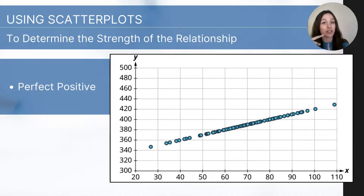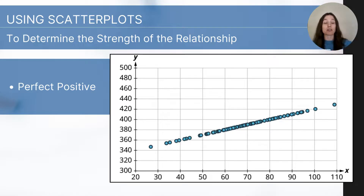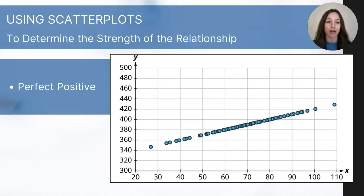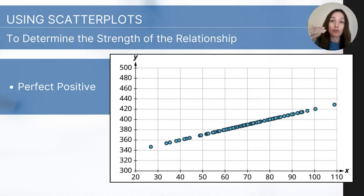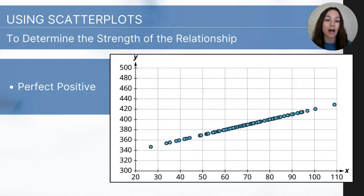Our dots represent the intersection between the two variables, but the dots as a whole — looking at them as a pattern — can show whether there is a relationship and to what degree and in what direction. In a positive relationship, when one variable is low, the other is low; when one is high, the other is high; and as one increases, the other increases. An example of a positive correlation would be: as the number of hours you work increases, so does your salary or wages.